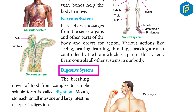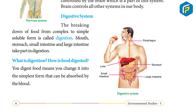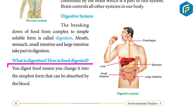The digestive system: the breaking down of food from complex to simple soluble form is called digestion. The mouth, stomach, small intestine, and large intestine take part in digestion. To digest food means to change it into the simplest form that can be absorbed by the blood.